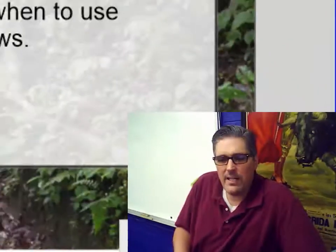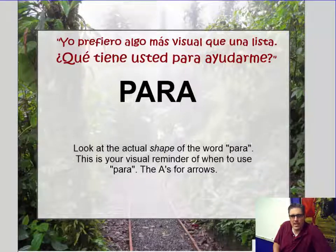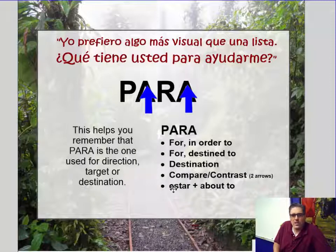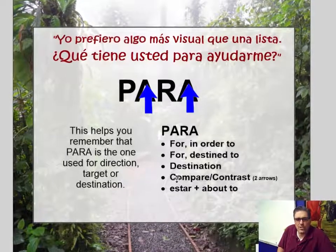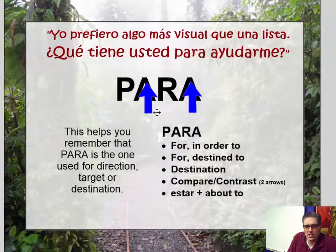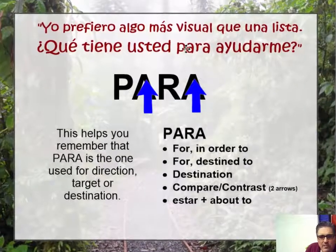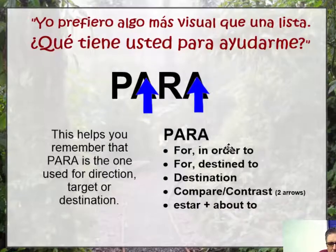Since the lists are hard for me, I created a visual approach. I looked at the two words por and para — they both have P, they both have R. One has an O, one has two A's. What can I do to remember the difference without memorizing lists? I looked at the actual shape of para and realized those capital A's are like arrows. This helps you remember that para is the one used for direction, target, or destination — if something is headed towards something, you use para.